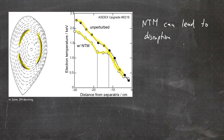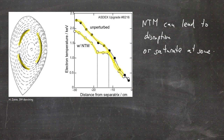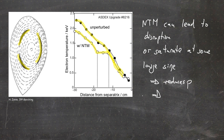Disruptions were discussed at the end of the last video, and you should remember that a disruption is something you want to avoid at a large-scale experiment. NTMs do not necessarily lead to disruptions — they could also saturate at some large island size, which is however also problematic because it means the overall plasma pressure and plasma beta are reduced, resulting in a less efficient experiment with worse confinement.